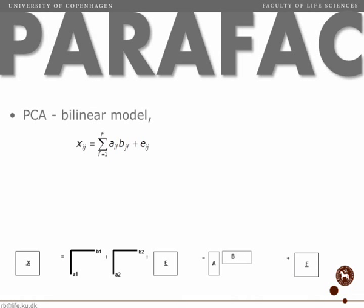In order to explain PARAFAC, we're going to start by looking at PCA. PCA is a bilinear model. We call it bilinear because it's linear in the scores and linear in the loadings. Here we can see the PCA model, a two-component PCA model of a matrix. We call the scores A here, and we call the loadings B.